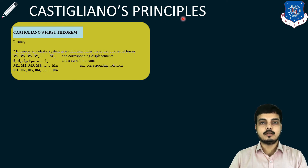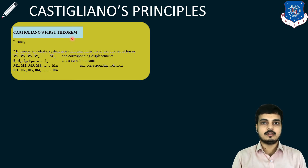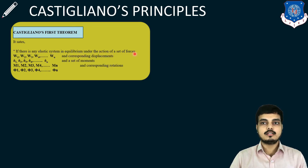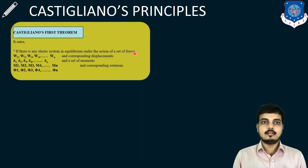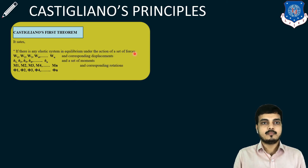Now here, Castigliano's first principle. What is Castigliano's first principle? It states that if there is any elastic body or a system in equilibrium under the action of a set of forces — like W1, W2, W3, up to Wn — there will be some creation of deflection, like delta 1, delta 2, delta 3, up to delta n.